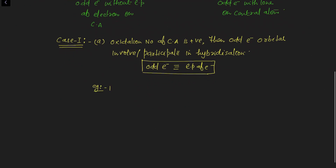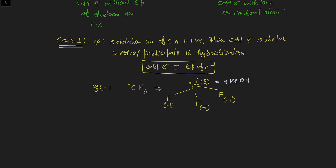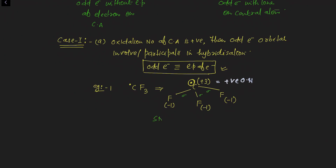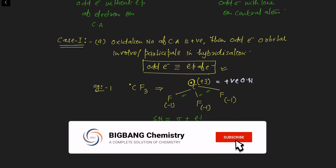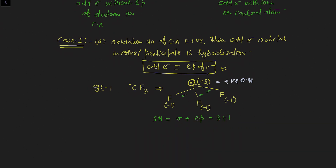Example number one: CF3 free radical. Draw the Lewis dot structure of this free radical. The oxidation number of fluorine is minus one for each fluorine, so the total oxidation number of carbon is plus three — a positive oxidation number. According to the rule, since the central atom has a positive oxidation number, the orbital of this odd electron will participate in hybridization. We will consider this odd electron as a lone pair. There are three sigma bonds, and with the odd electron counted as a lone pair, the steric number is 3 + 1 = 4. The hybridization of this species is SP3.